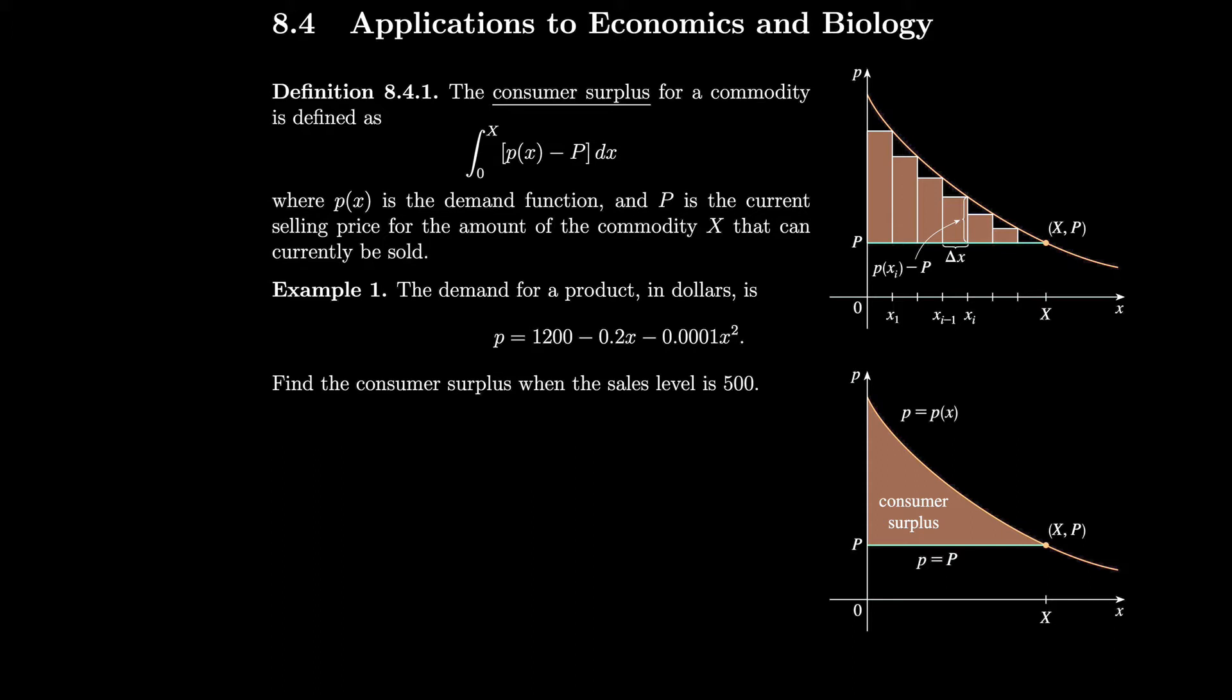This lowercase p is our price that we're willing to pay, this capital P is the price that we're paying, so the difference between these two values is how much we save. This is our savings, and then we multiply that by the number of units that we're buying.